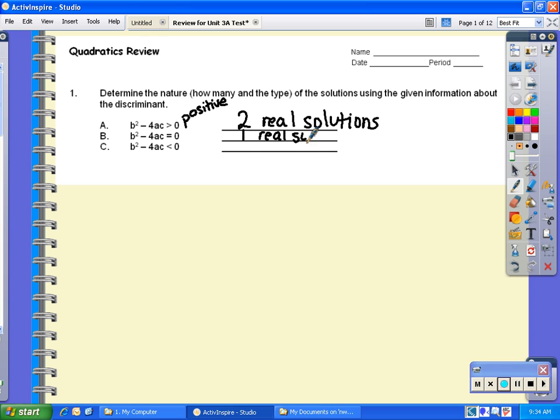And if I know that b² - 4ac, the discriminant, is less than zero, that means it is negative. Since I cannot take the square root of a negative number, I know that I'm going to have two imaginary solutions, which means I'm going to have no real solutions.